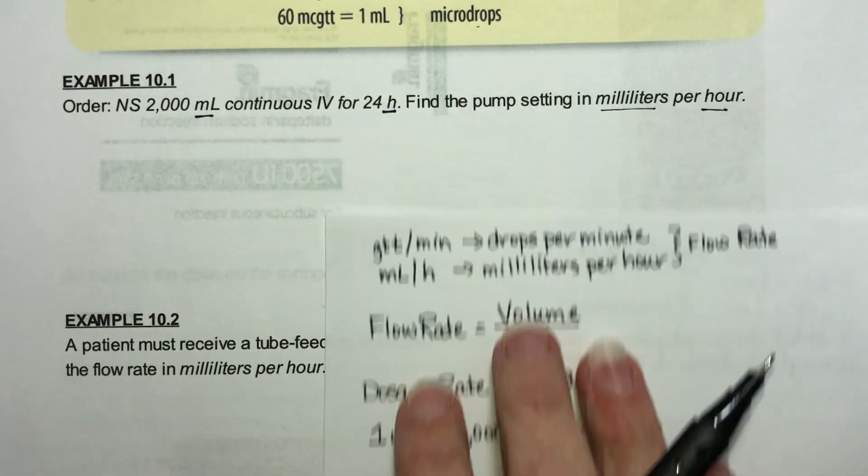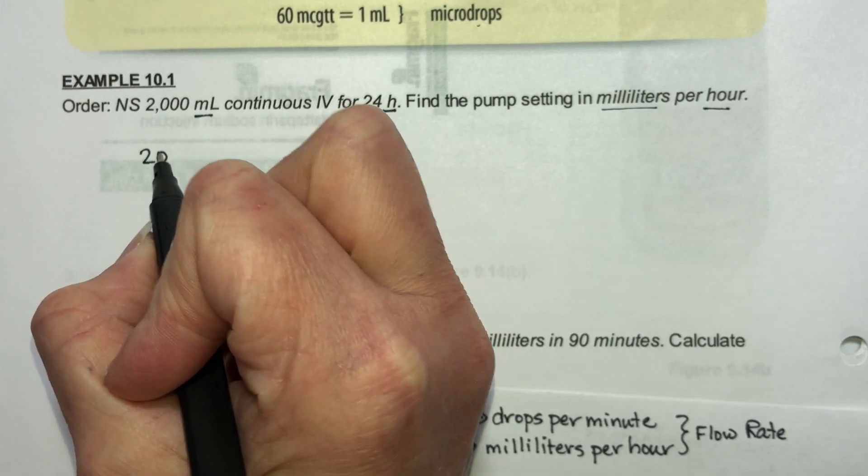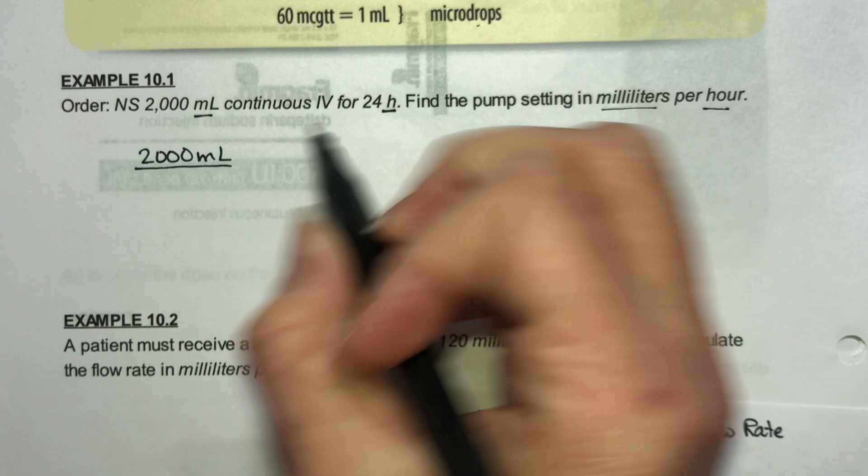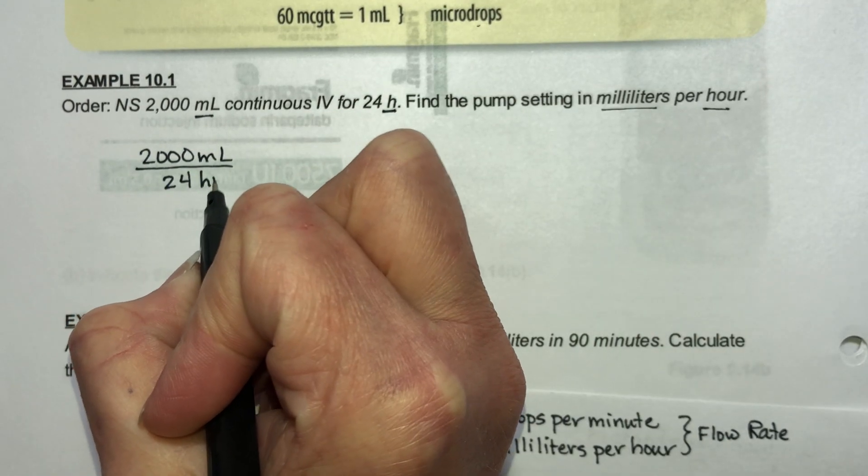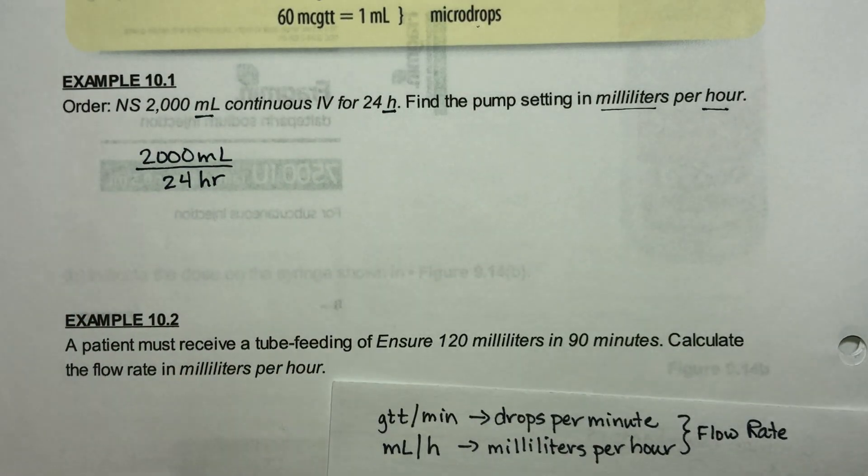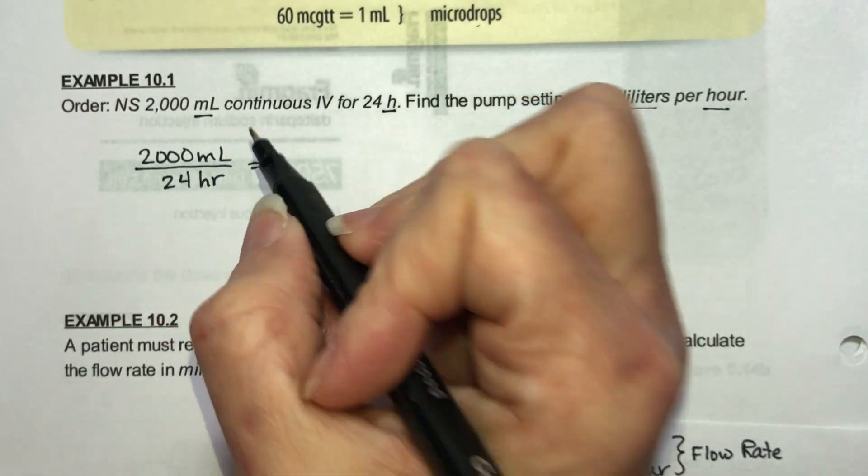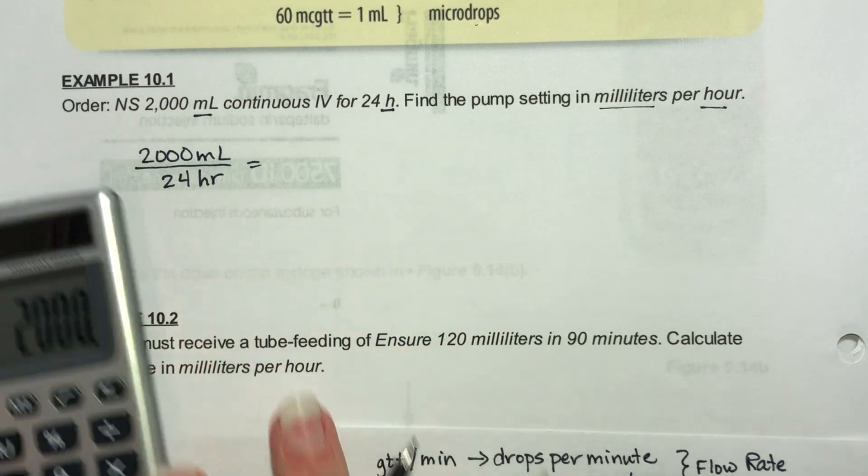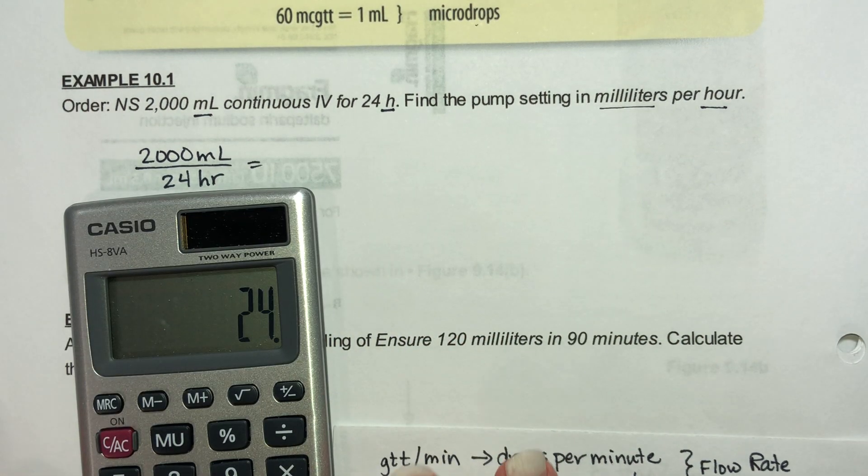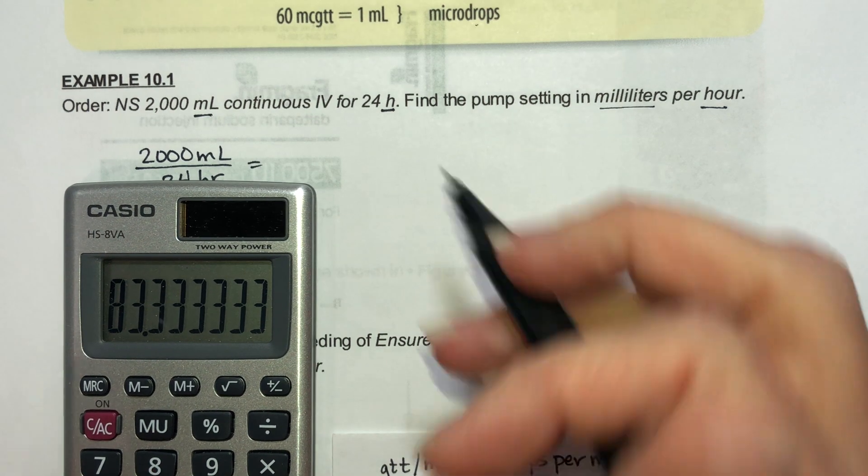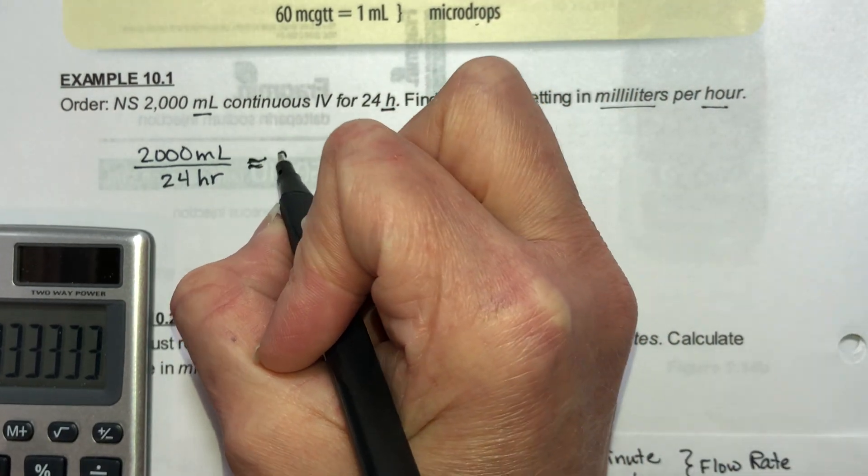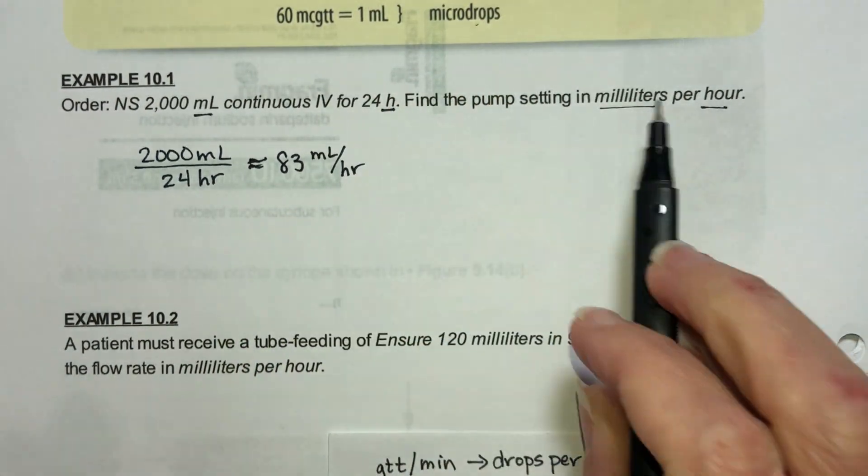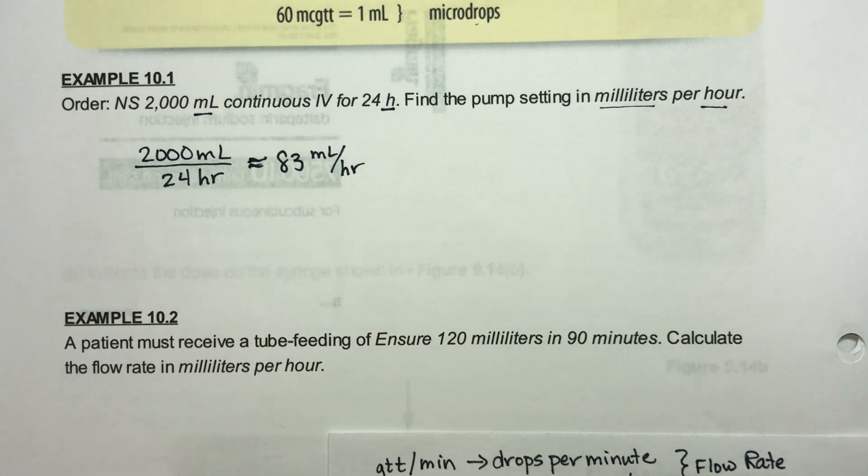Flow rate is volume over time. This is our volume 2,000 milliliters over the amount of time 24 hours. I use HR for hours you can use H if you wish. Now just do the arithmetic 2,000 divided by 24 gives me 83.33 so let's say we set this at 83 milliliters per hour.